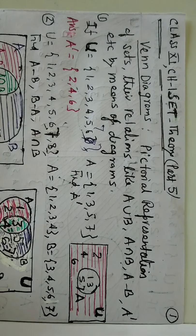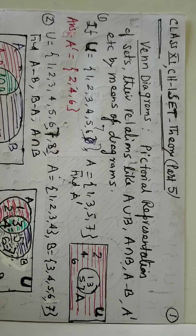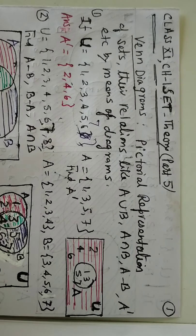I am S.B. Mishra, going to teach you set theory. This is part 5: Venn diagram.